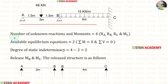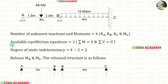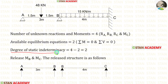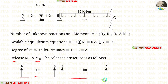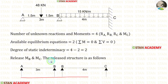In this beam, the number of unknown reactions and moments are 4: RA, RB, RC, and MC. The available equilibrium equations are 2 — sigma M = 0 and sigma V = 0. The degree of static indeterminacy is equal to 4 minus 2, which gives 2. Let us release MB and MC. When we release MB and MC, this continuous beam becomes two different simply supported beams — this is called the released structure.